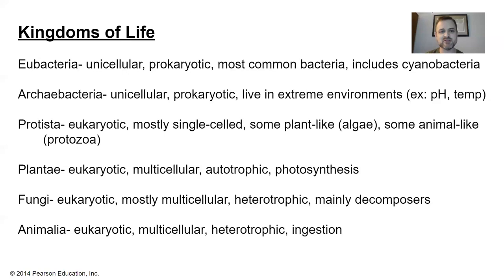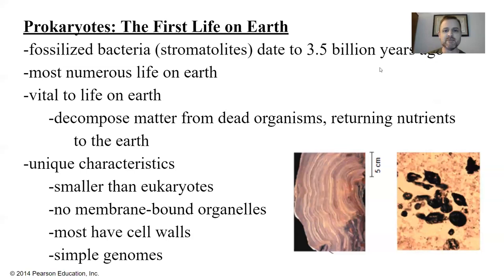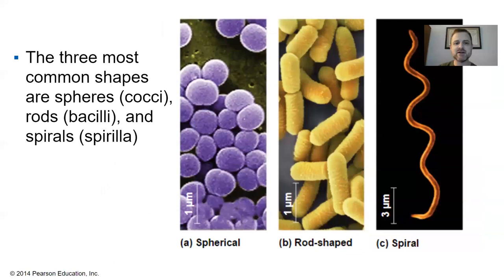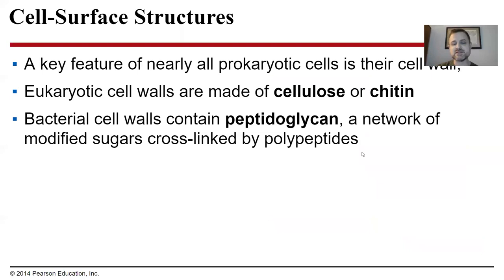This classification scheme is important — if the AP exam gives you a description of a cell and asks what kingdom to put it in, you should know. The most numerous life on Earth are prokaryotic cells. They're vital because they're the main decomposers. When things die, bacteria decompose them and raw materials go back into the environment. Bacteria are smaller than eukaryotic cells, have no organelles, most have cell walls, and their genomes are very simplistic. The three shapes of bacteria: spherical cocci, rod-shaped bacilli, and spiral-shaped spirilla.